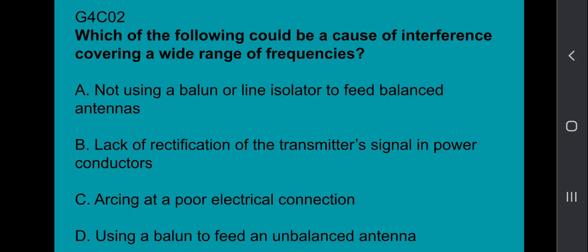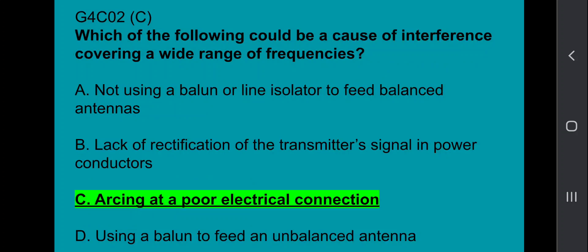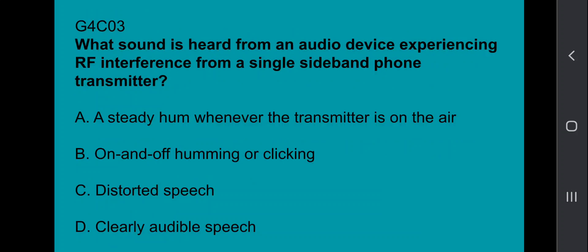G4C02, which of the following could be a cause of interference covering a wide range of frequencies? Arcing at a poor electrical connection. G4C03, what sound is heard from an audio device experiencing RF interference from a single sideband phone transmitter? That's going to be distorted speech.